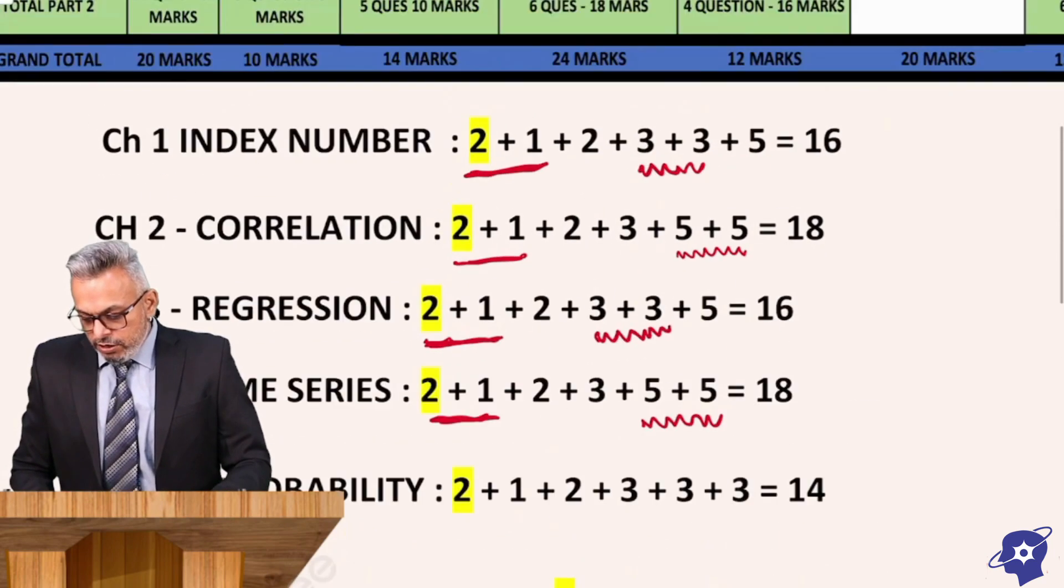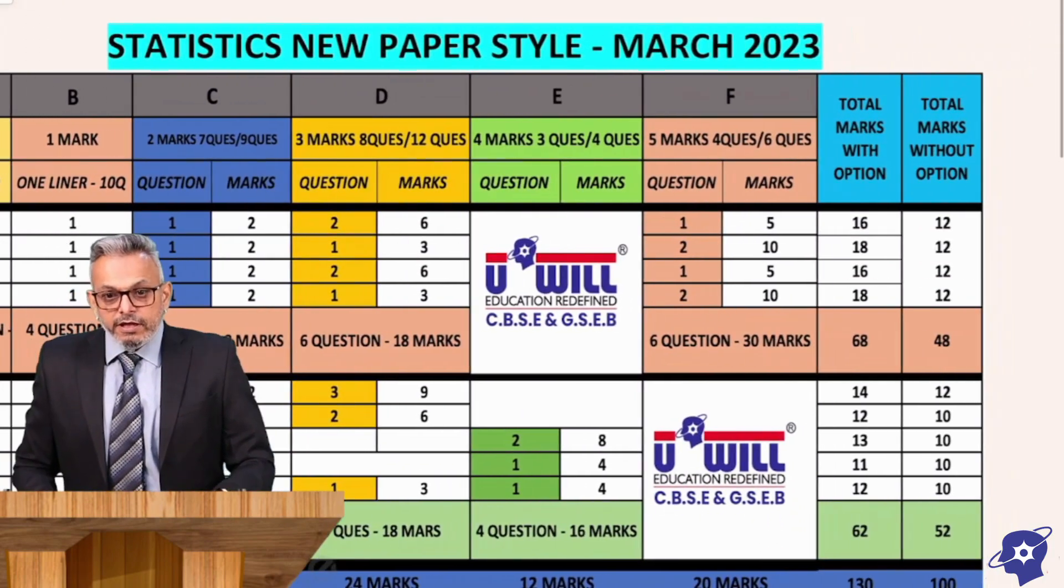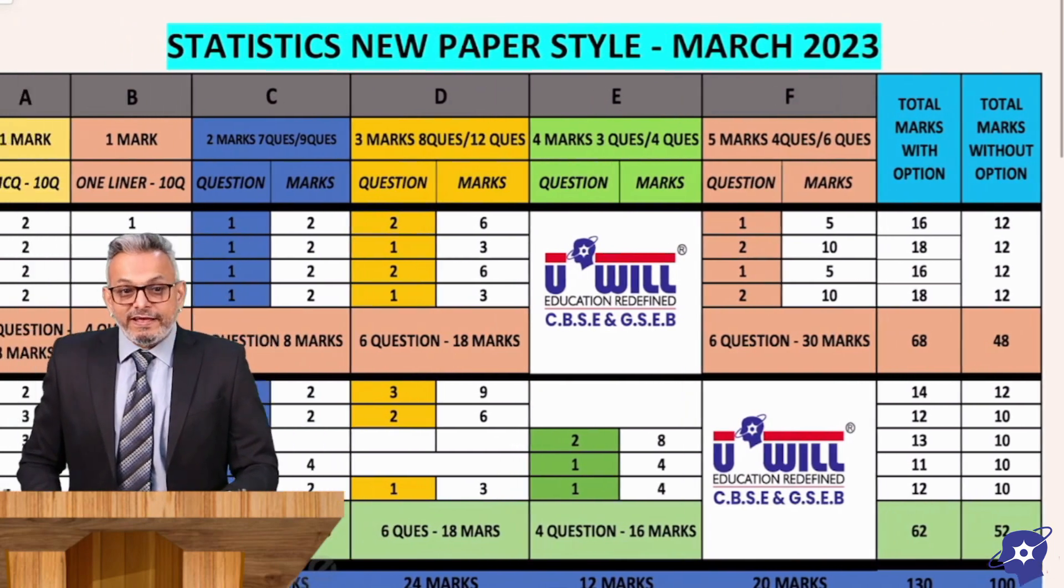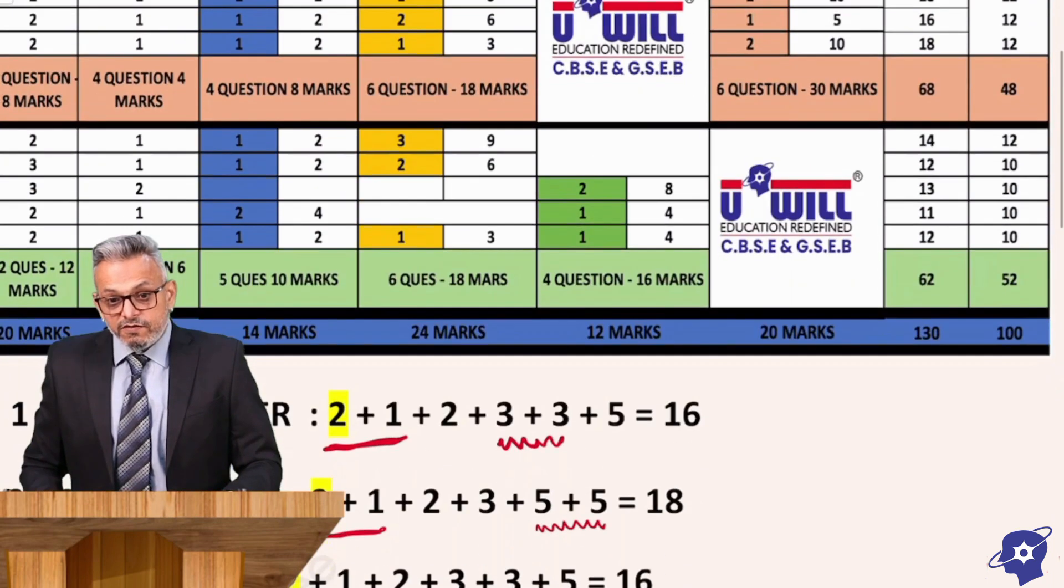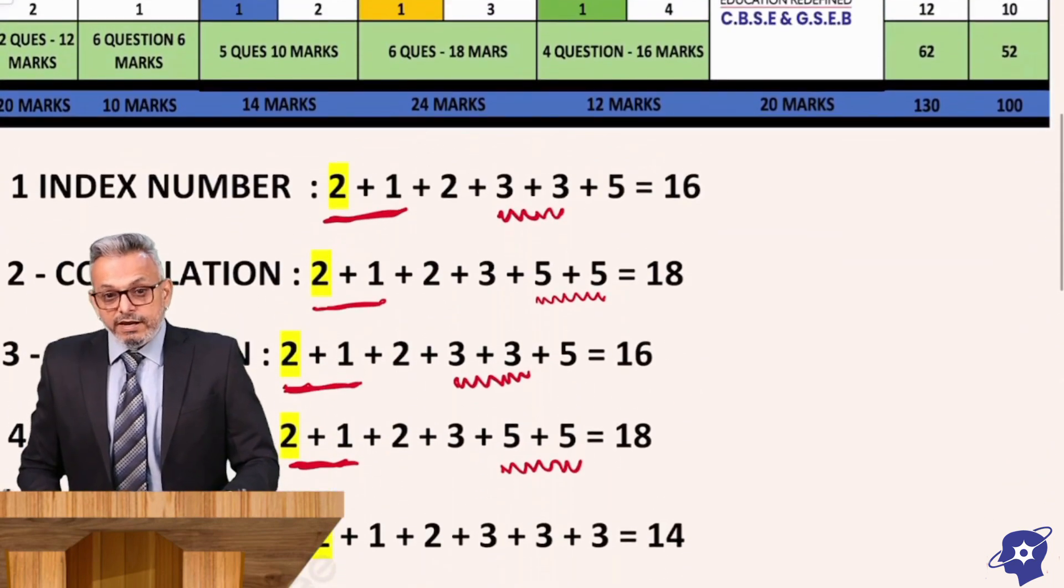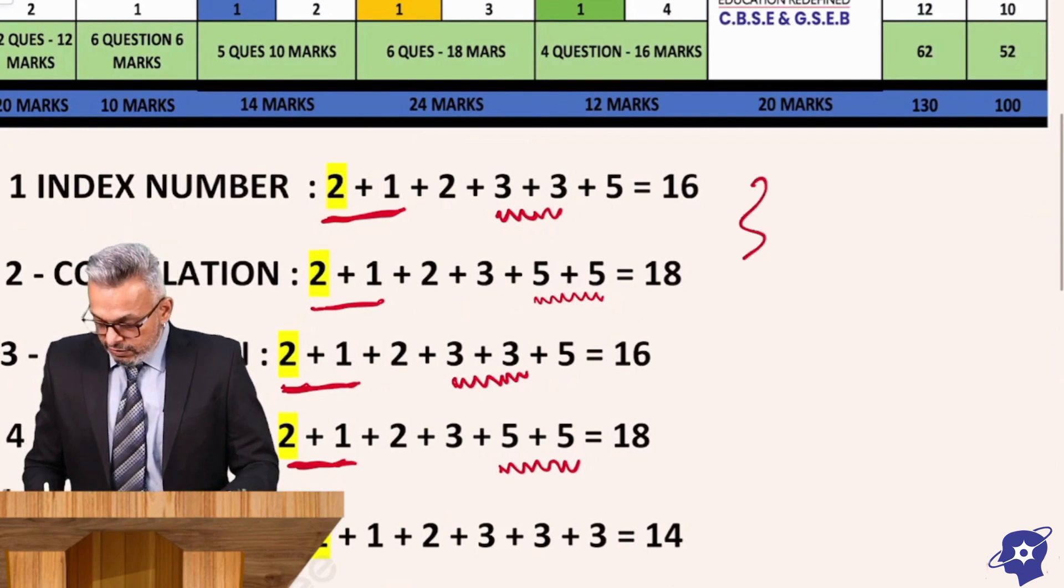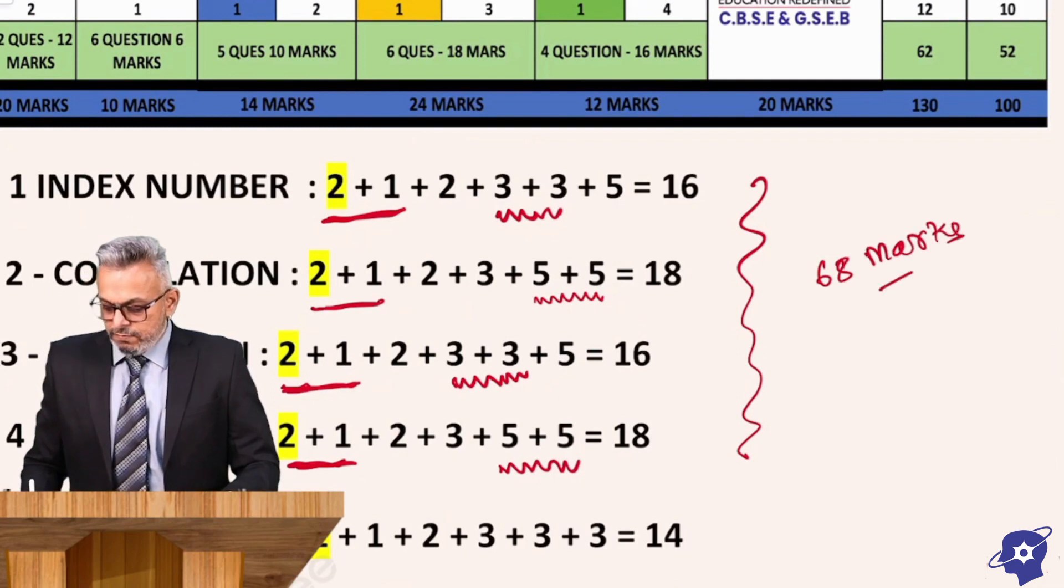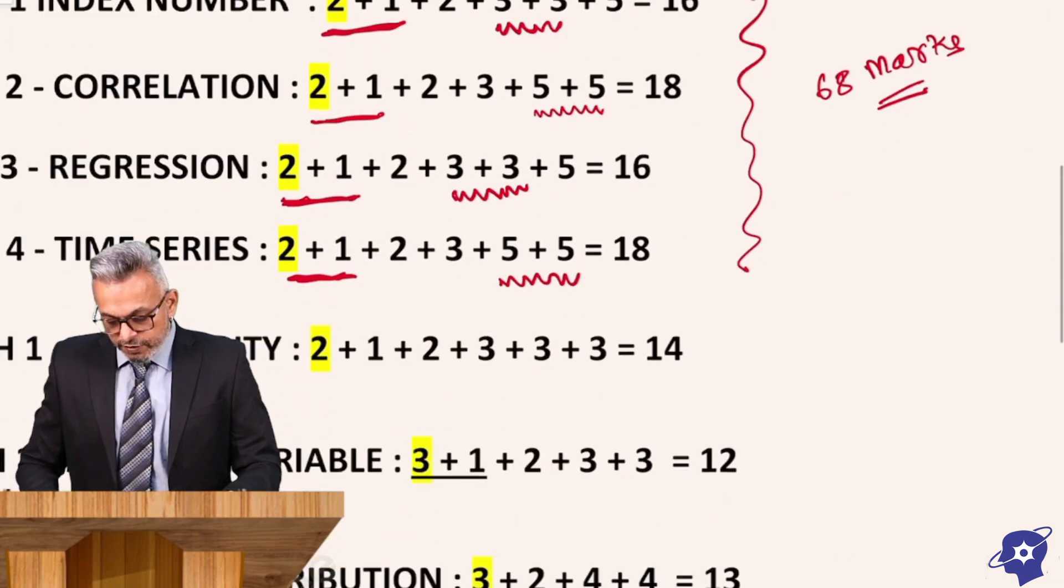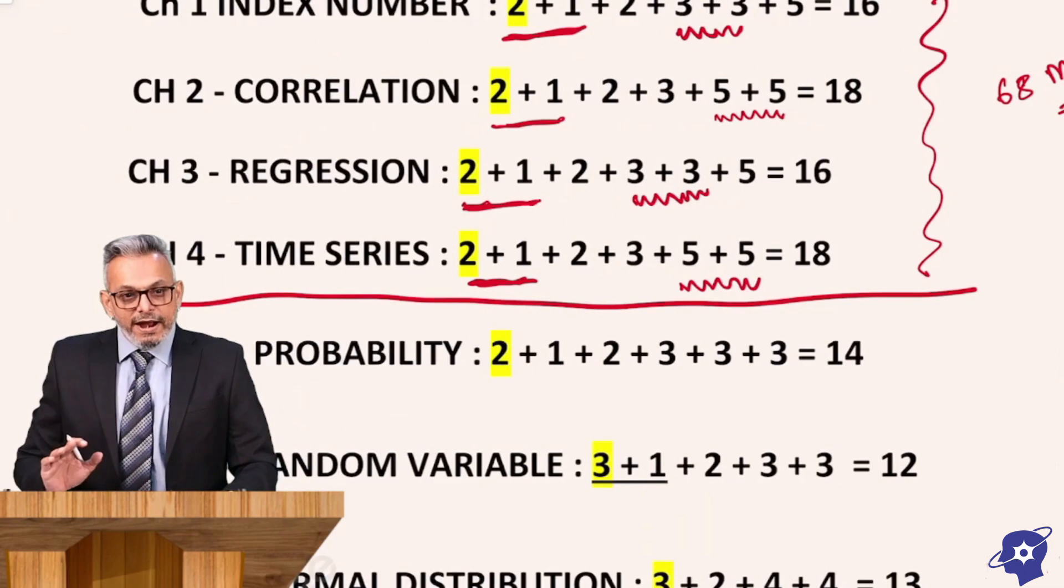Part 1 is over. The total of part 1 you can see over here is a total of 68 marks. Part 1, 68 marks you can see over here - 16 and 18 is 34, 16 and 18 is 34. So this total comes to 68 marks. Now we go to part 2.